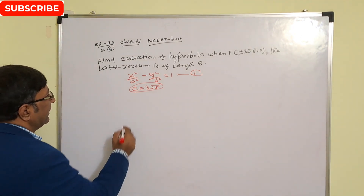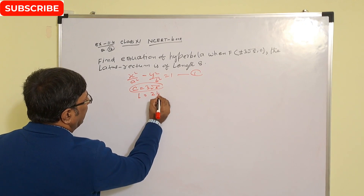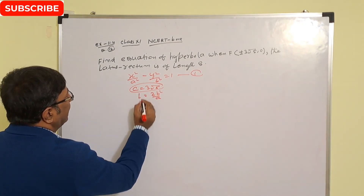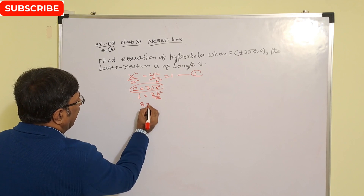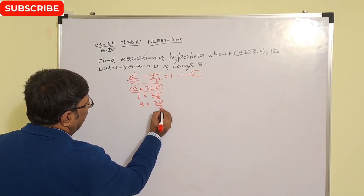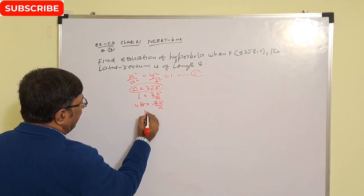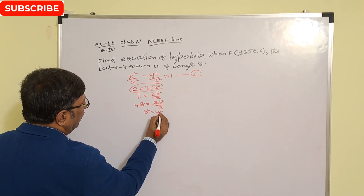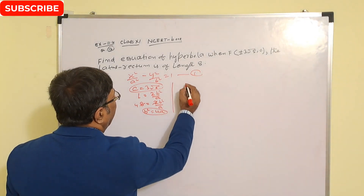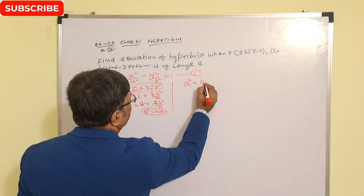The latus rectum length is given as 8. We know latus rectum L = 2b² / a. So 2b² / a = 8, which gives us b² = 4a.